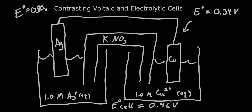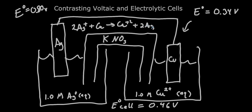This cell is going to run in the direction where we have our cathode be the thing with the higher reduction potential. So we can write this as a reaction: silver is going to be reduced and copper is going to be oxidized. Since silver is being reduced, this is the cathode side, and since copper is being oxidized, this is the anode side.